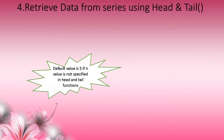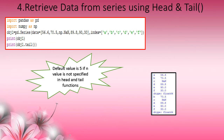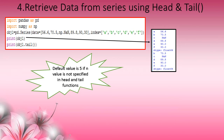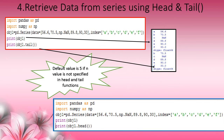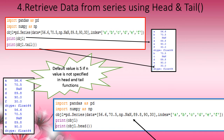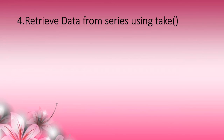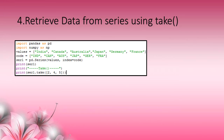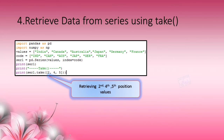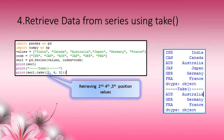If no n value is given in head or tail, the default is 5. So object1.tail() with no n value retrieves the last 5 values, and object1.head() with no n value retrieves the first 5 values. Another function used for retrieving data is the take function. Take takes the positions given in a list inside the square bracket — for example, take([2, 4, 5]) retrieves the values at the 2nd, 4th, and 5th positions from the Series object.